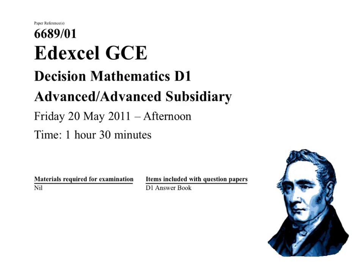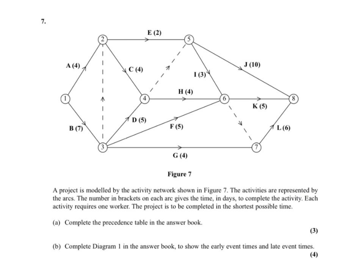Edexcel AS Mathematics, D1, from May 2011, Question 7. While this looks like a network I've seen many times, it's not. This is an activity network. You can see there are arrows on the arcs and things such as dummy activities, those dashed lines.